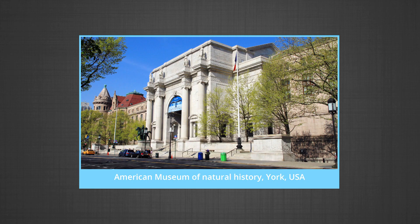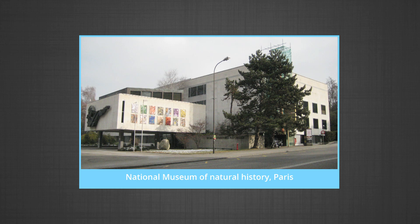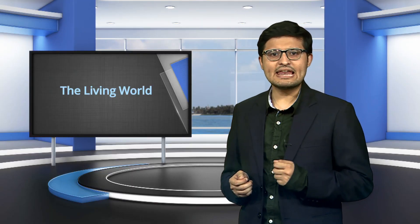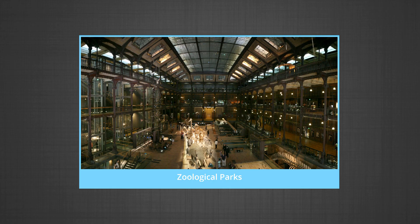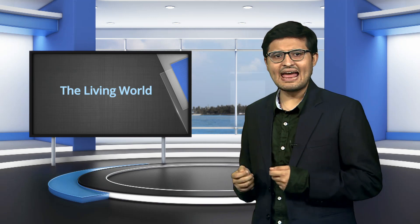Major museums of the world include the American Museum of Natural History, New York; the State Museum of Natural History, Stuttgart, Germany; the Museum of Natural History, Switzerland; the National Museum of Natural History, Paris; the National Museum of Natural History, Barakhamba Road, New Delhi; and the Natural History Society of Mumbai. Zoological parks are places where wild animals are kept in enclosures providing a natural environment. The scientific purpose of zoos is to breed animals that are facing threats in their natural habitat due to poaching and habitat destruction.